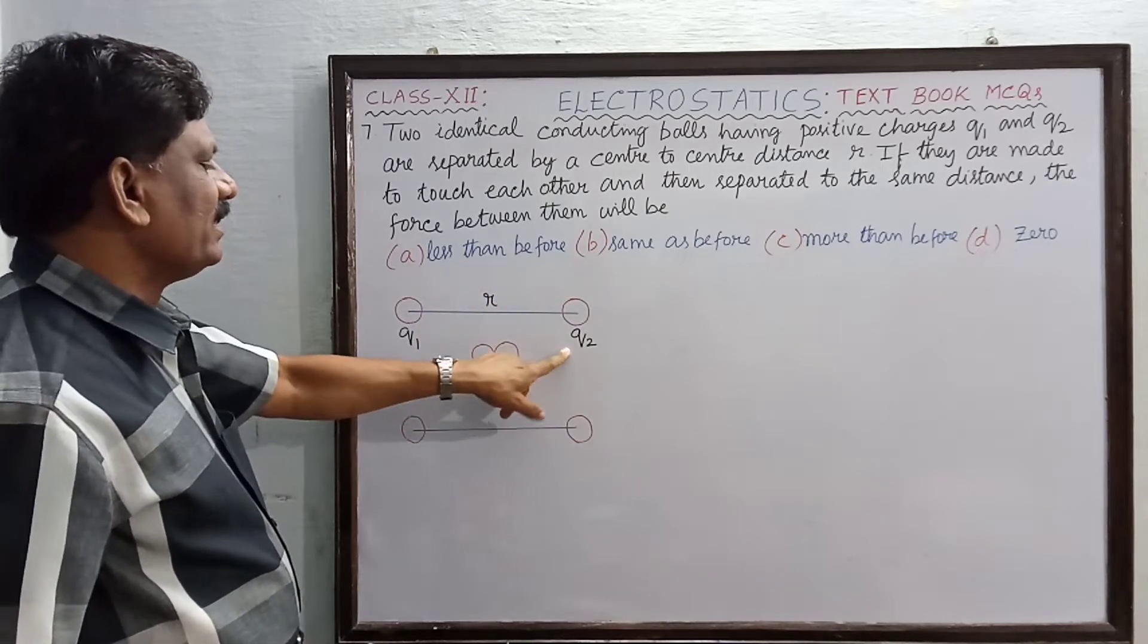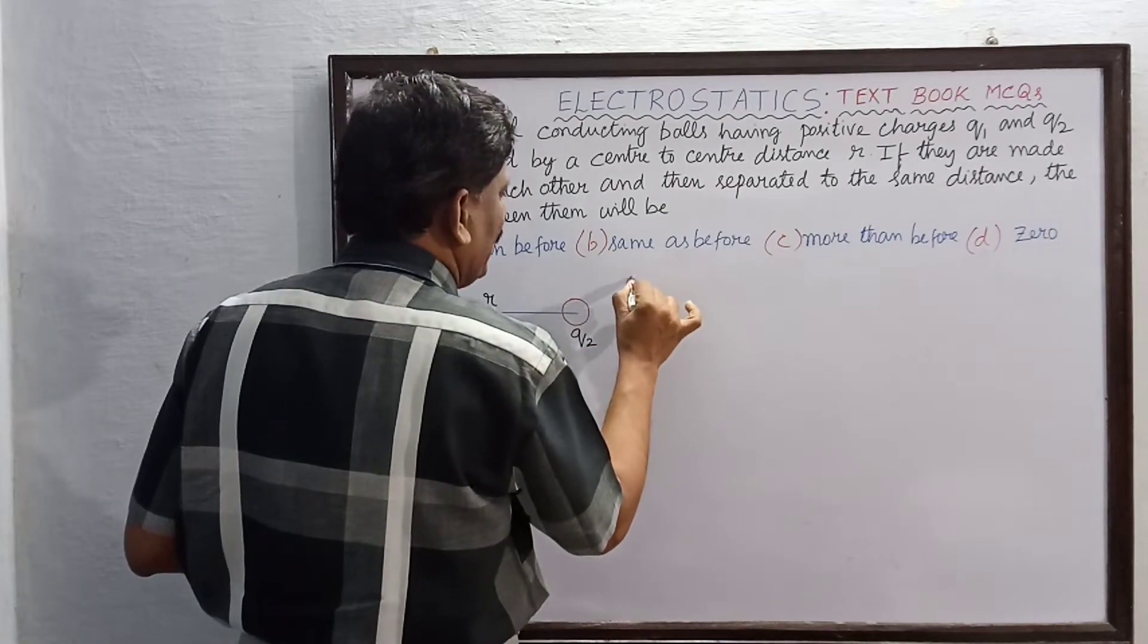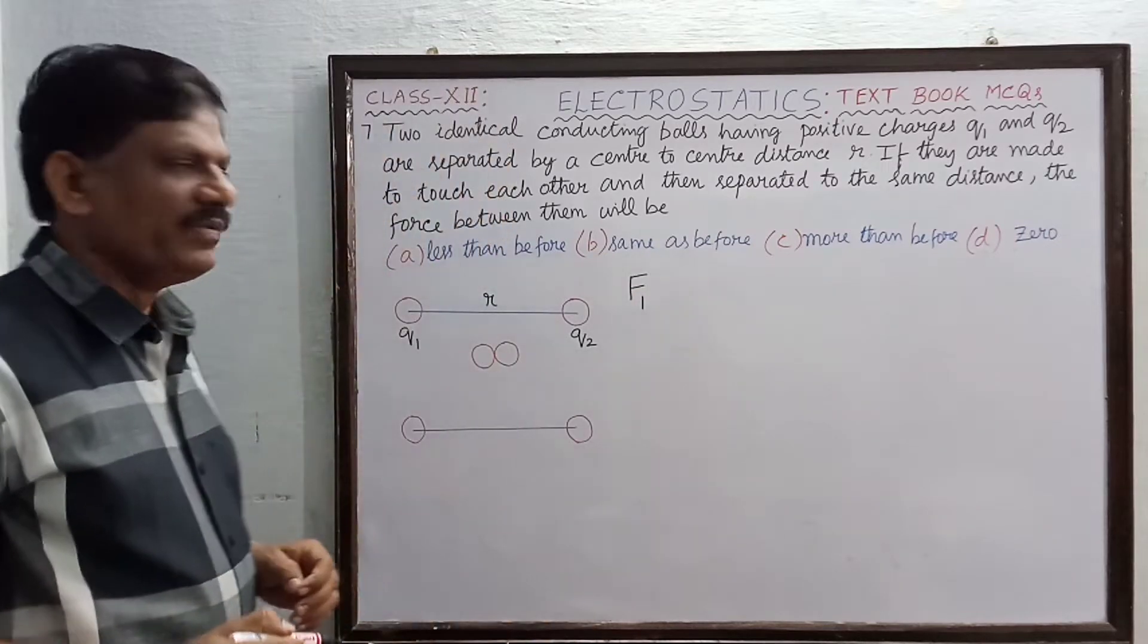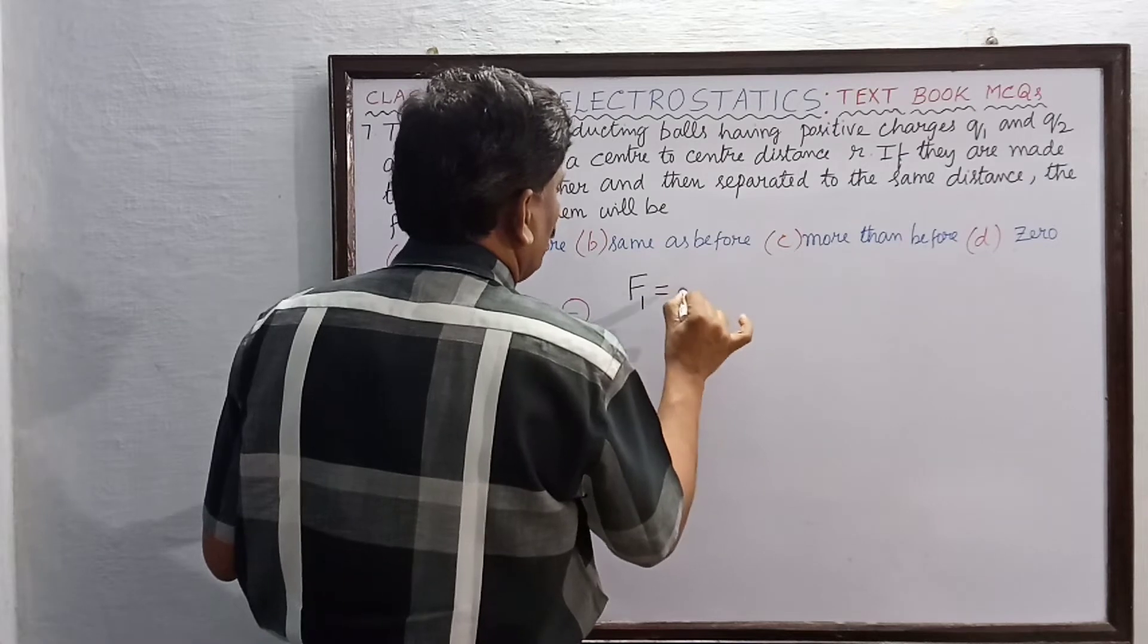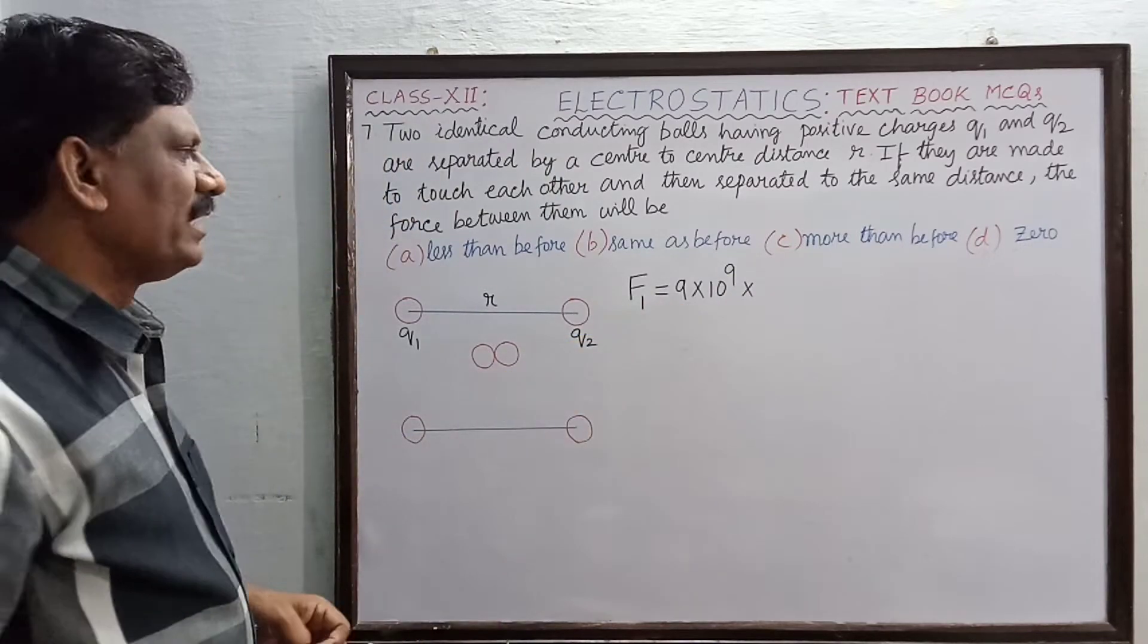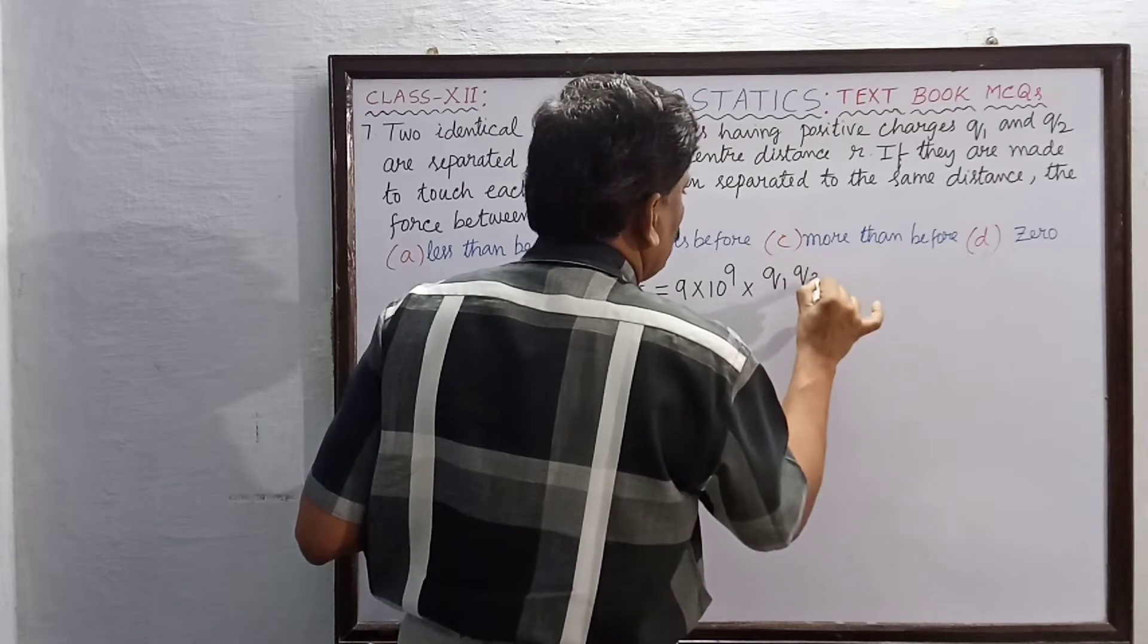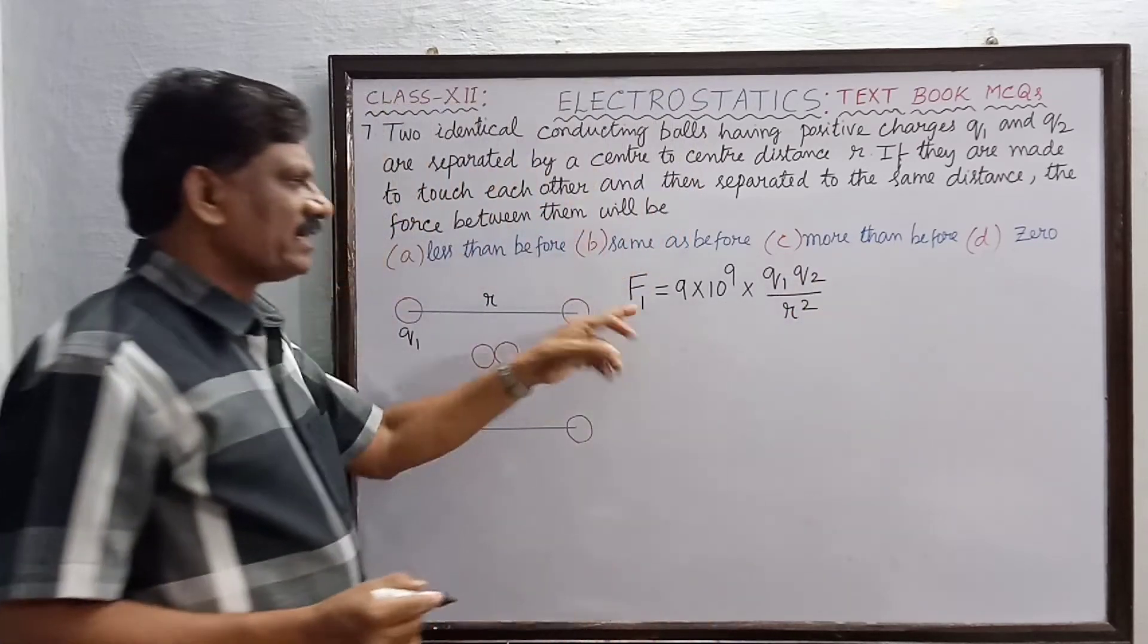And the charges present in them are q1 and q2. So from Coulomb's law of electrostatics, let us take F1 as the force between them. F1 is equal to 9 into 10 to the power of 9, that is the constant 1/(4πε₀), multiplied by q1 into q2 divided by r square. So this is the expression for the force of attraction between them, the Coulomb force F1.